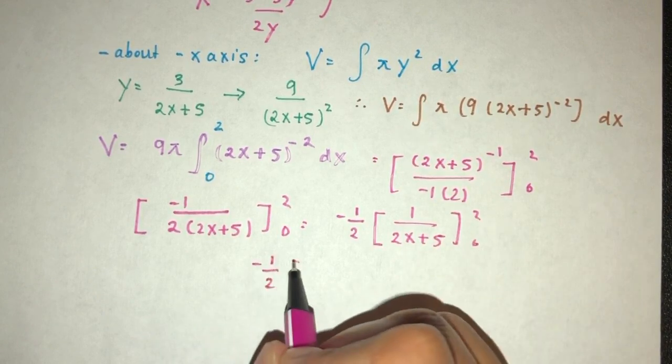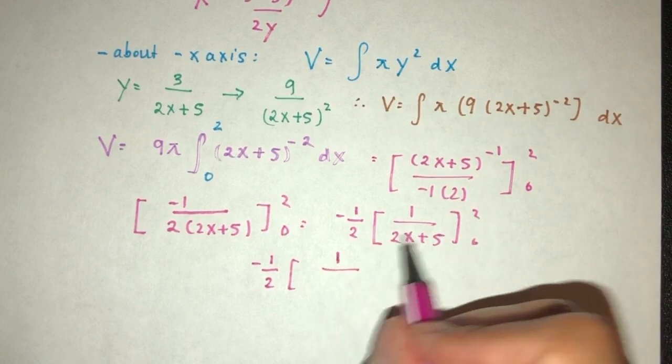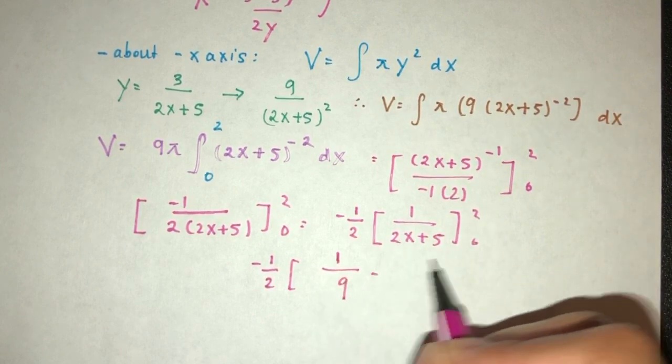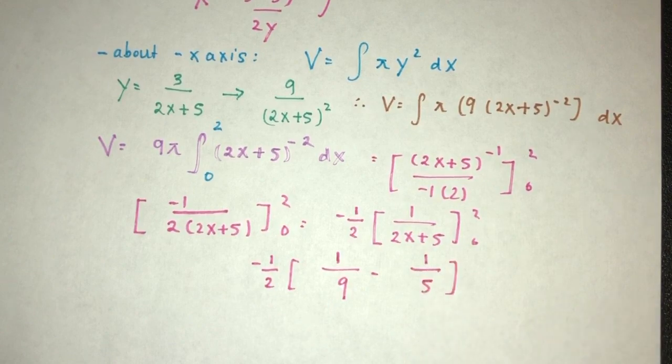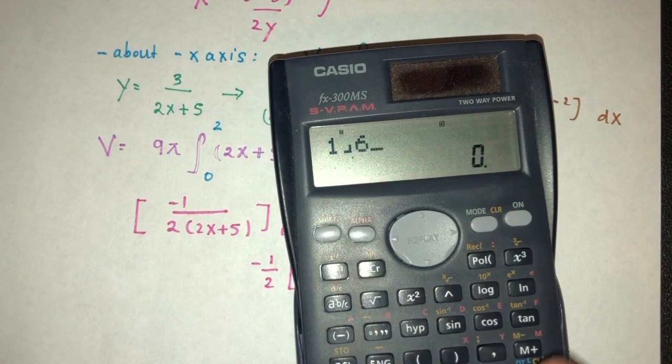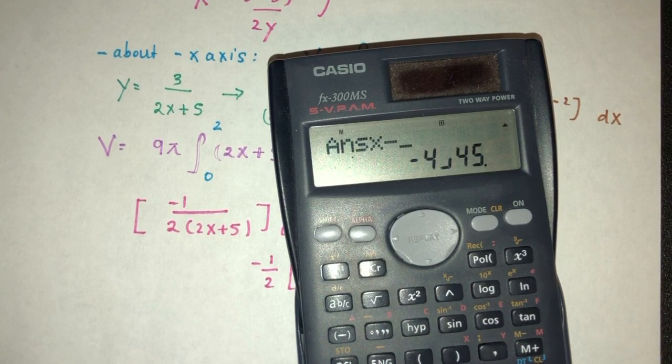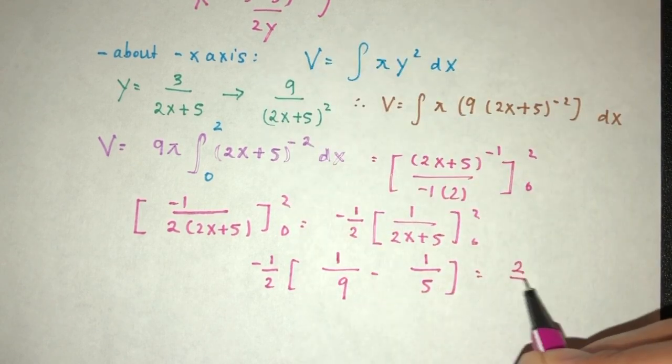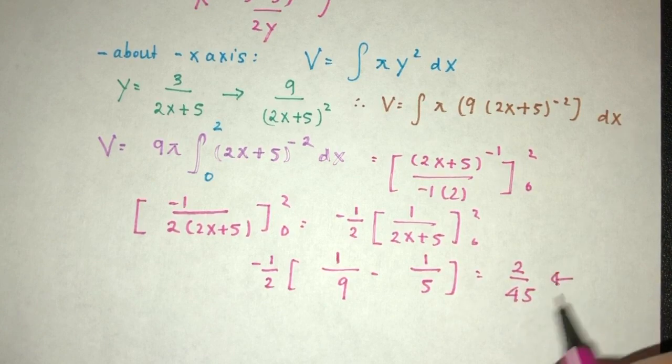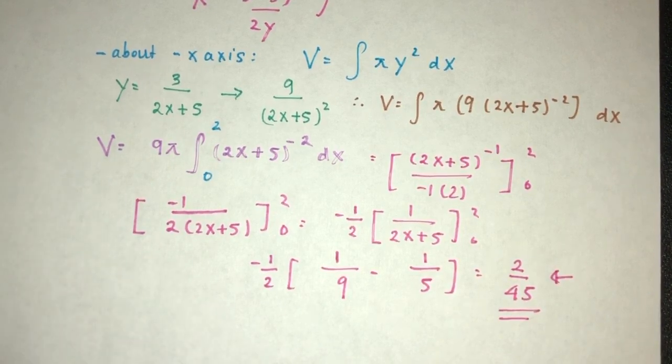Minus half. And you have 1 over, that should be 2 times 2 over this, will be 9, minus 1 over 5. So 1 over 9 minus 1 over 5 should be this, times minus 1 over 2. That should be the value of 2 over 45. And this is your volume that you will get.